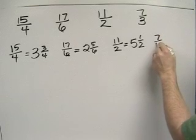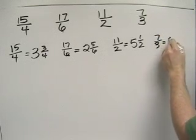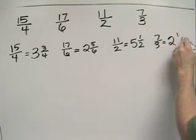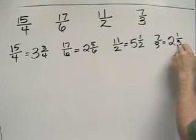And 7 thirds. 3 goes into 7 two times with 1 left over, so that's 2 and 1 third.